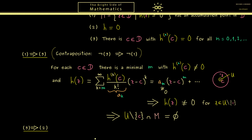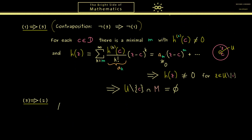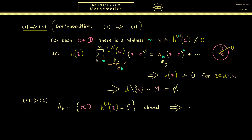Now we go from statement 3 to 2. For showing this implication, one considers closed and open sets. First, define the set A_k as a closed set — the set of all points z in d where the k-th derivative of h at the point z is 0. This has to be a closed set because the derivative is a continuous function, and this is the preimage of a closed set (just one point), and therefore it needs also to be closed. And if we define a new set A given as the intersection of all these A_k's, then this is also closed, since an arbitrary intersection of closed sets is always closed.